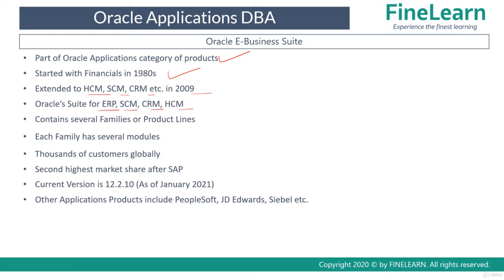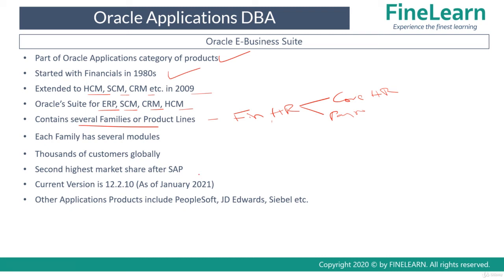Oracle E-Business Suite contains different families. A family can be, for example, Financials — Financials is one family, HR is one family. These families again contain individual modules. For example, in HR there is Core HR just to manage employee records basically, and there can be Payroll, which is again a different module. E-Business Suite is a combination of different families and each family has different modules. There are thousands of customers globally for Oracle E-Business Suite — it is one of the most used ERP softwares in the market with the second highest share after SAP. The current version is 12.2.10 as of January 2021.